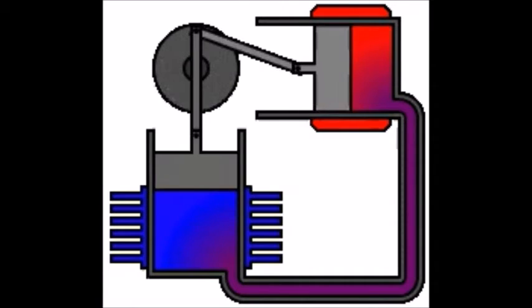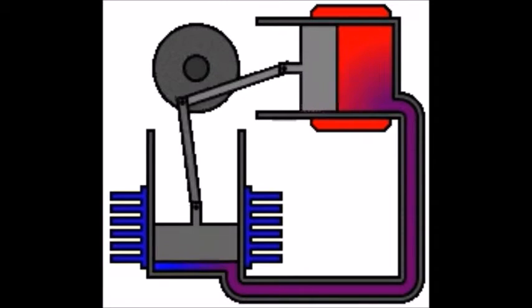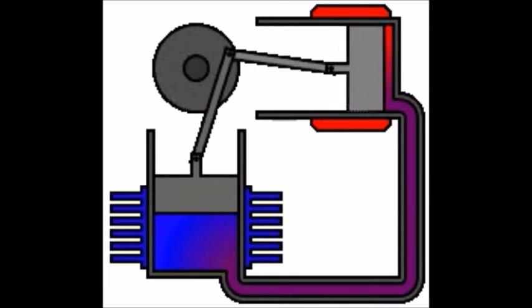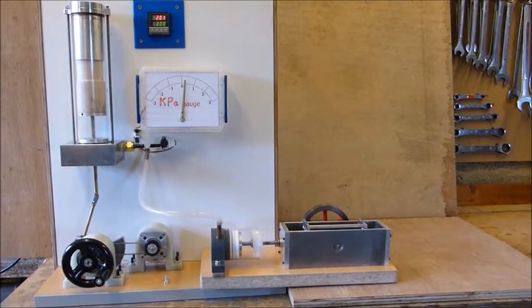This results in the crank disc for the displacer rotating at a different speed than the crank disc for the piston. This is why we call it the asynchronous Stirling engine. Have a look at the video.